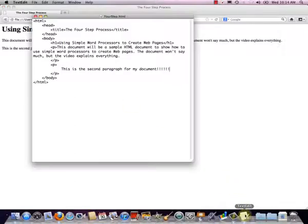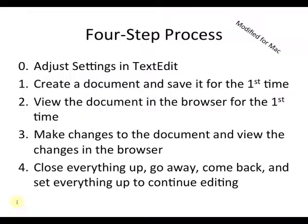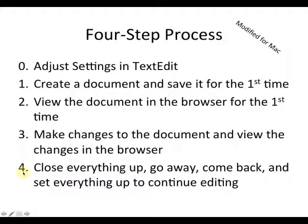Now we're ready to go back and make as many changes as we like, save them, go back to the browser, refresh, and see our document. That is the completion of the four-step process. Step zero was to adjust the settings in TextEdit. Step one was to create a document and save it for the first time, paying attention to where it's going, what it's called, and what type of file it is. Step two was to view the document in the browser for the first time. Step three was to make changes and view them in the browser. Step four was to close everything up and set it back up, including testing to make sure the file open in the browser and in TextEdit is the same file.